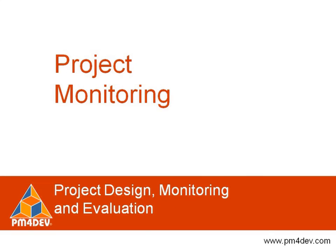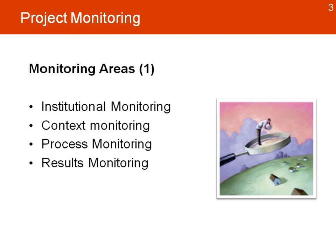Project monitoring looks at two areas. The first area is institutional monitoring. We also look at context monitoring, process monitoring, and results monitoring. Those are key elements that help us look at the project and give us a good idea about the health of the project.